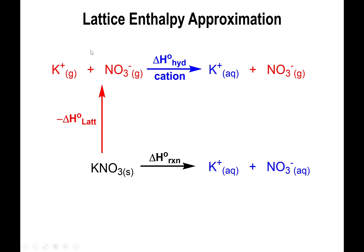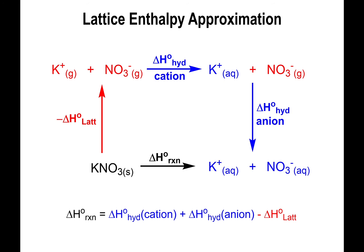This is specifically the enthalpy of hydration of the cation. If you had more than one potassium — say two — the delta H of hydration of the cation is multiplied by two; if three halves, multiply by three halves. After this, we complete the process by hydrating the anion from gas to aqueous, giving the delta H of hydration of the anion, also multiplied by its balancing coefficient. So: negative delta H lattice plus delta H hydration of cation plus delta H hydration of anion equals delta H of reaction.